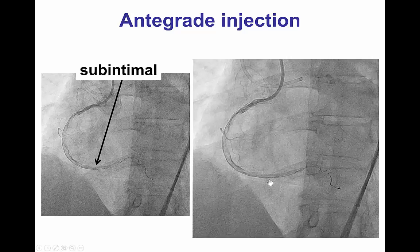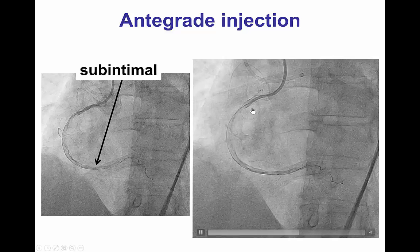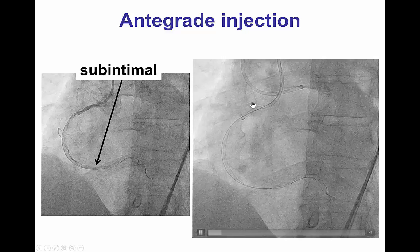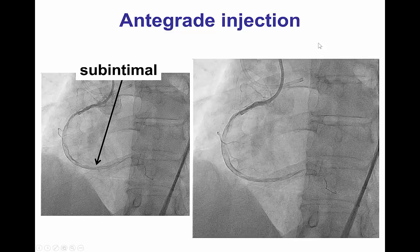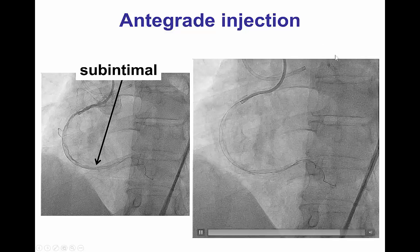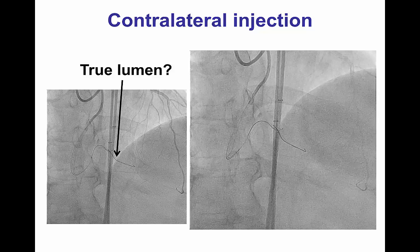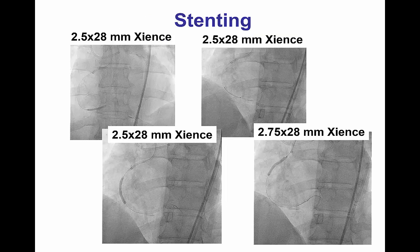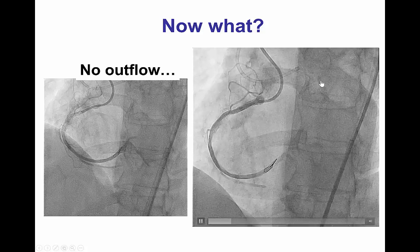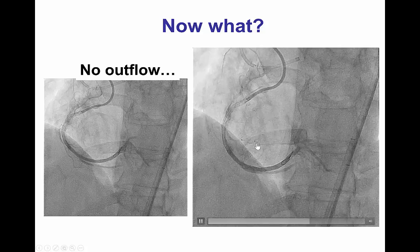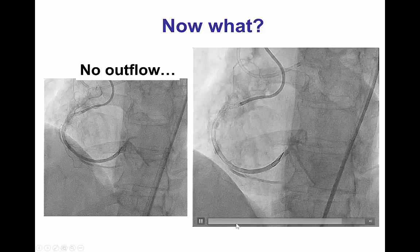We then attempted to re-enter into the distal true vessel. However, inadvertently during crossing attempts, there was an injection from the antegrade guide catheter. This is why it is important, when antegrade dissection-oriented strategies are used, to disconnect the antegrade manifold to avoid inadvertent injection. After wire manipulation, we believed the wire was in the distal true lumen and proceeded with stent implantation — however, we were clearly not in the true lumen. After stenting, the patient developed chest discomfort and ST-segment elevation, and angiography showed that outflow of every major branch — posterolateral, PDA, and PLV — was essentially cut off.